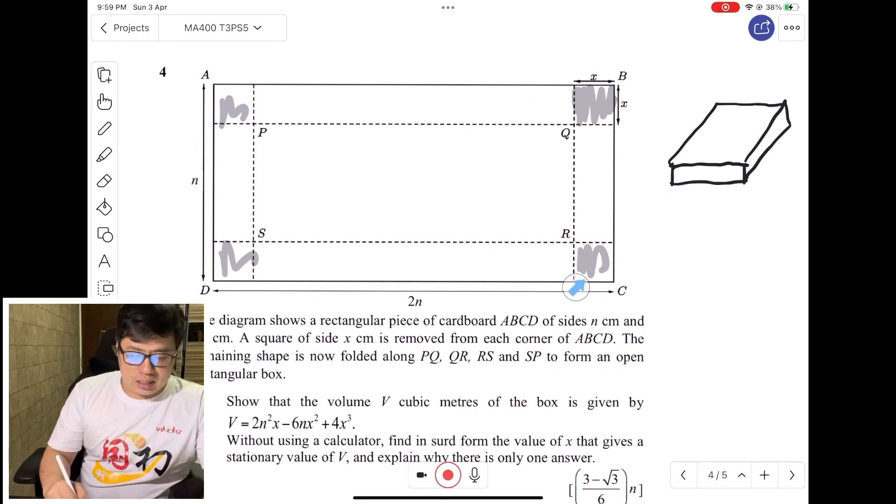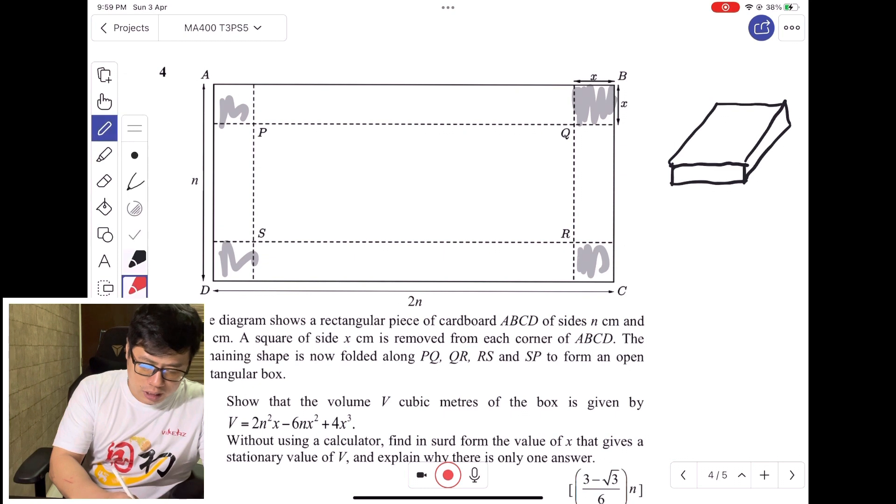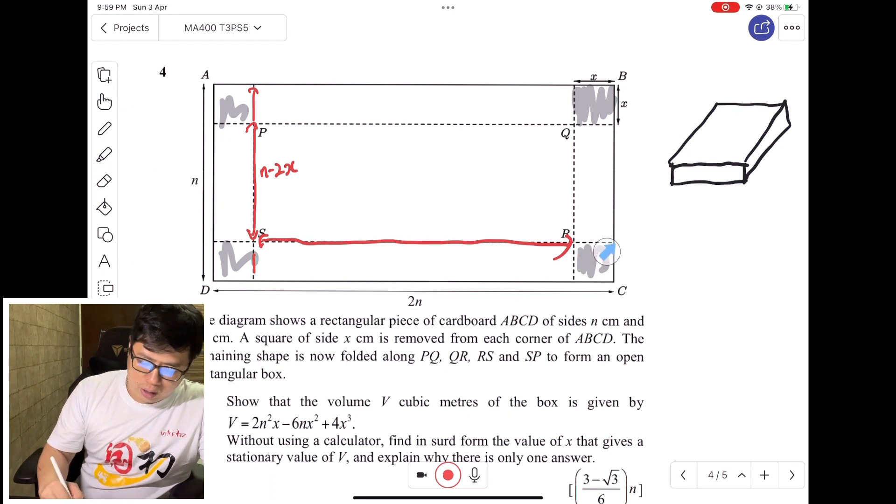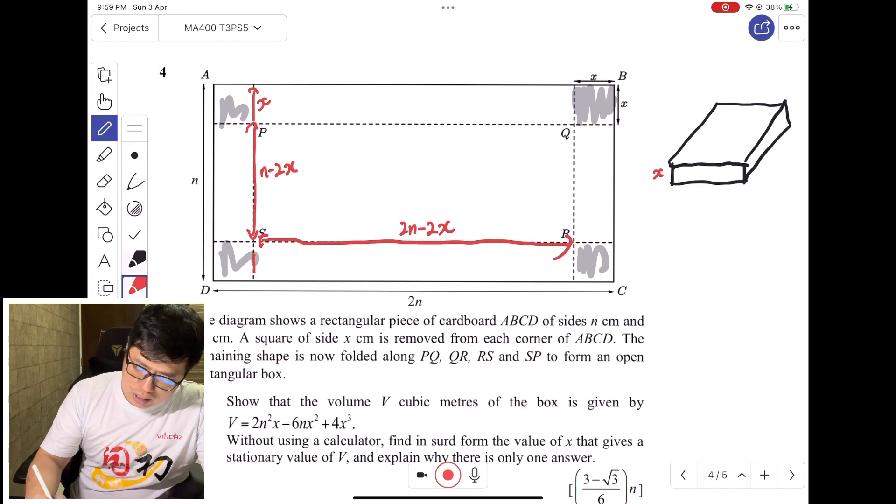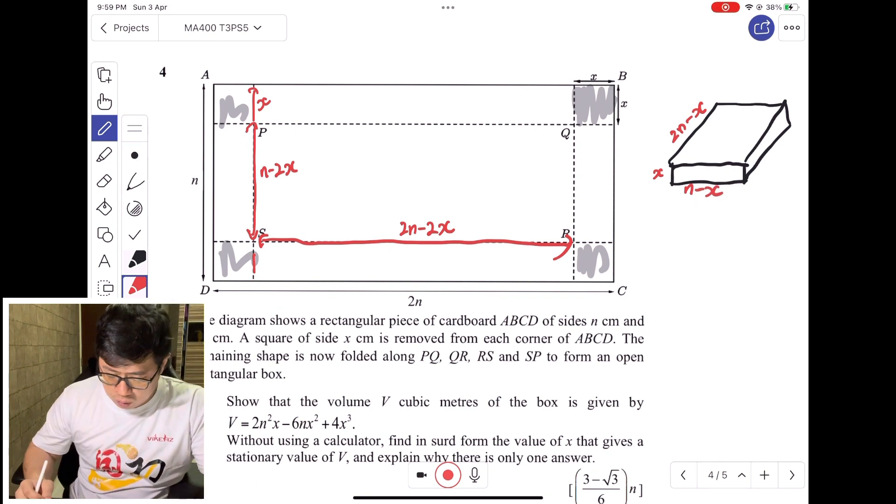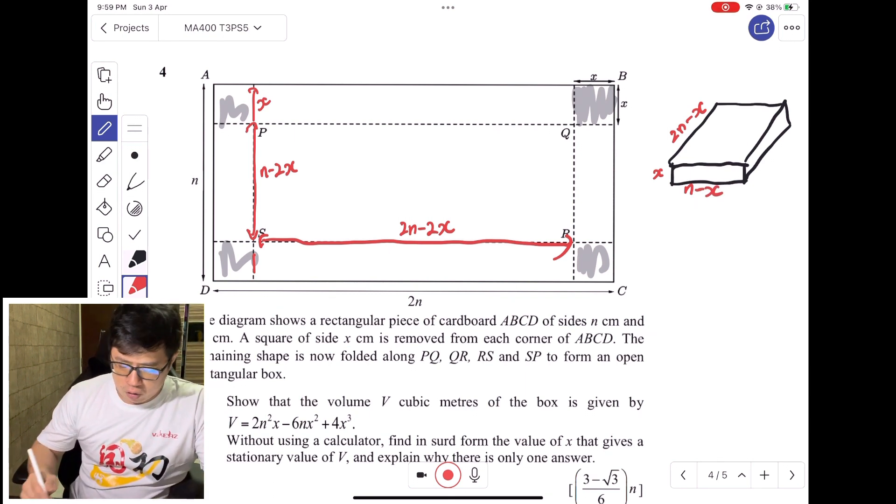This 2N is fixed. If we look at this dimension here, subtracting X and X, this should be N minus 2X. The whole entire dimension is 2N, so minus X minus X gives 2N minus 2X. The dimension of the box will be X, so this is X, this is 2N minus 2X, and this dimension here is N minus 2X. Now show that the volume of the box is given by the following.